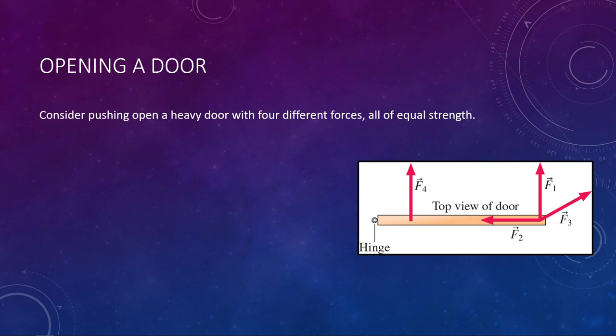Looking at these forces and using your own experience with pushing on doors — or even stand up and go to the door to try this. Force number one is at the end of the door, located where the handle is typically situated. It is very easy to open a door if you apply a force to the outside edge, which is exactly why we put handles on the outside ends of our doors.